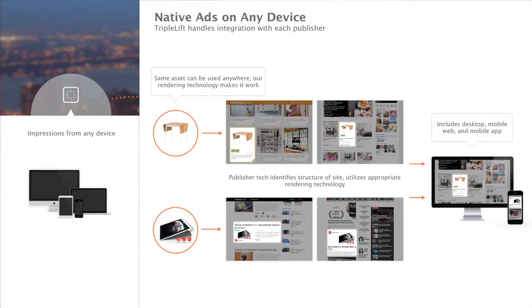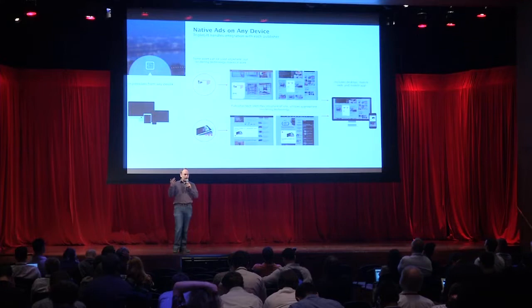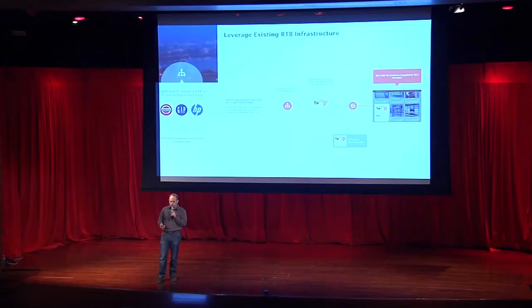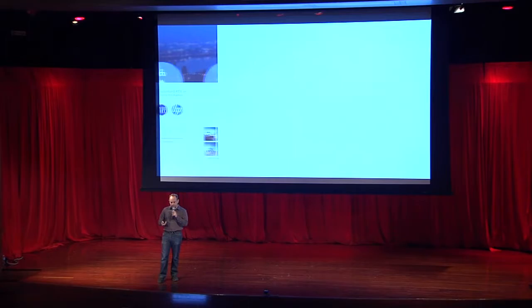It has to require no extra effort by the advertiser. What that means is that they bid with an asset. In this example, there's a table or a computer, and it has to look great using the information we have about that particular asset on whatever that particular publisher may be. We need to leverage existing advertising infrastructure, meaning it needs to be biddable on existing RTB infrastructure. Currently people specify a particular banner ad and it just works everywhere — they need to be able to say the same about an image.